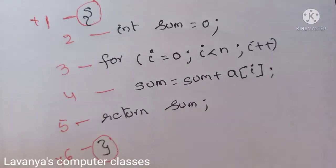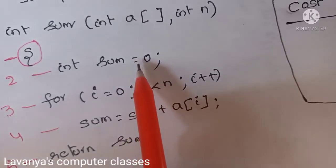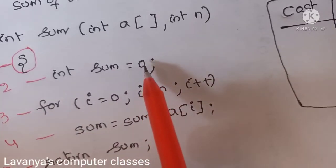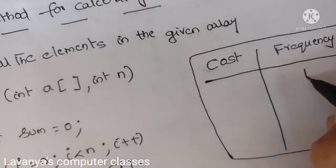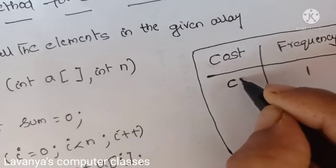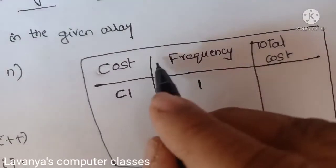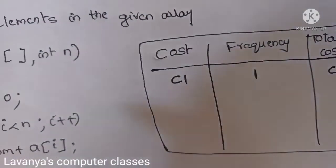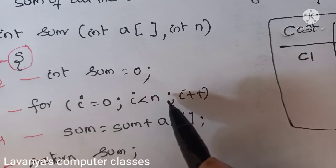Line 1 is the initialization statement: sum = 0. How many times is this line executed? Only once, so the frequency is 1. We don't know the exact execution time, so we use a constant c1. The total cost for this line is 1 × c1 = c1.